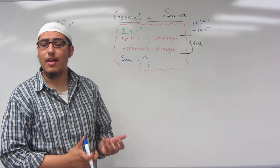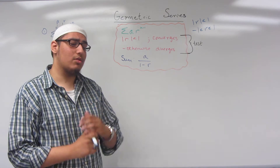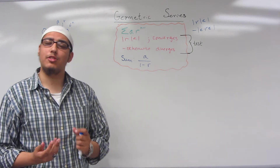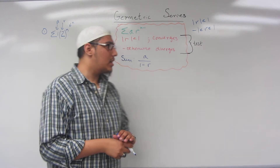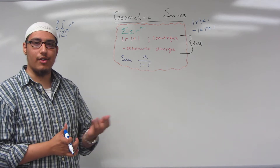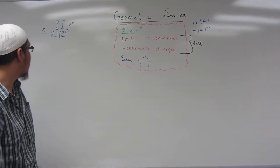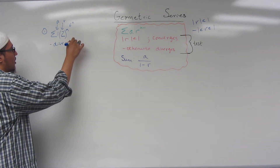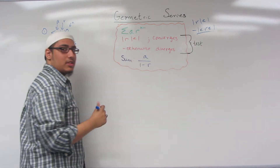It looks like this would diverge because 2 is not part of the interval between negative 1 and 1. Therefore, this series diverges according to the geometric series test. If we didn't realize it was a geometric series, the N-term test for divergence should be first on our mind. We conclude that this diverges because 2 is not part of the interval between negative 1 and 1.